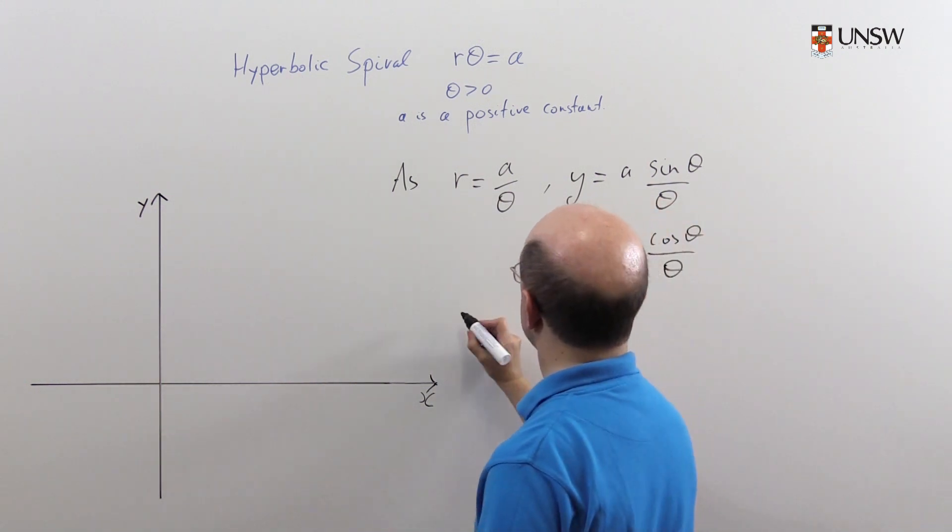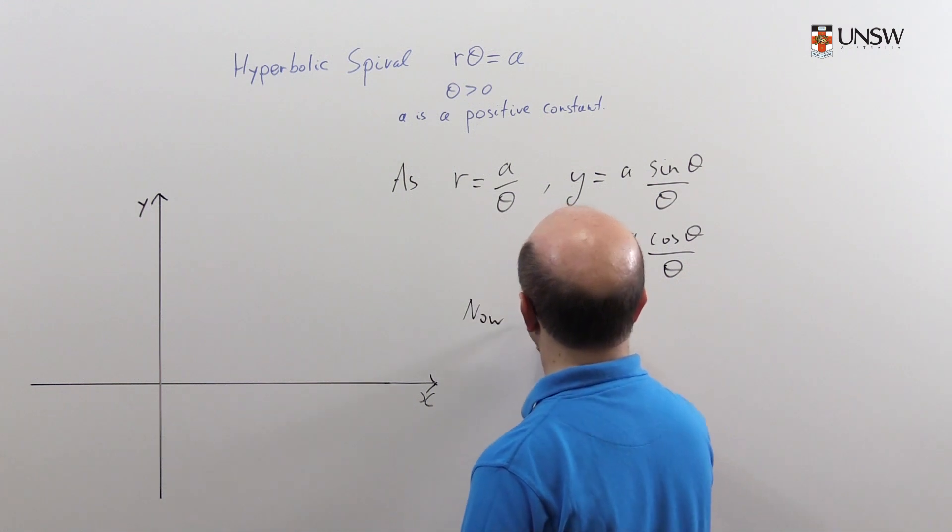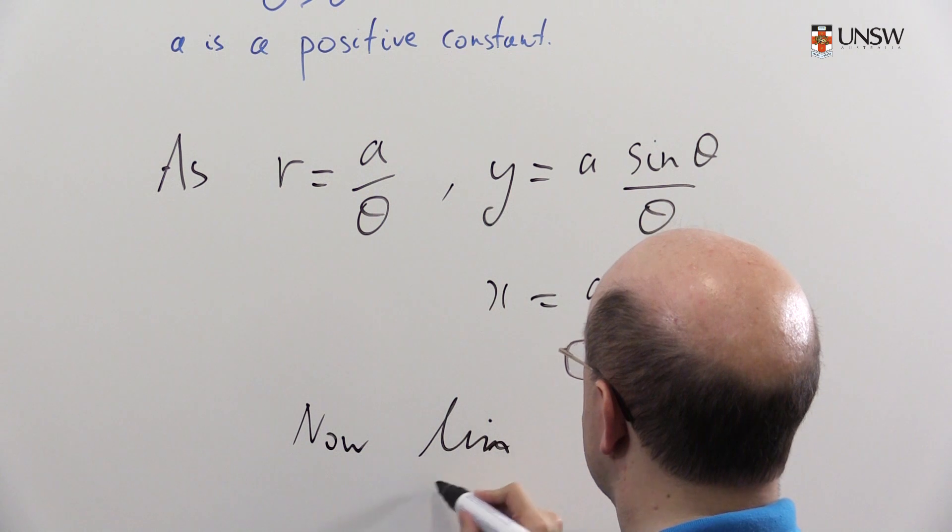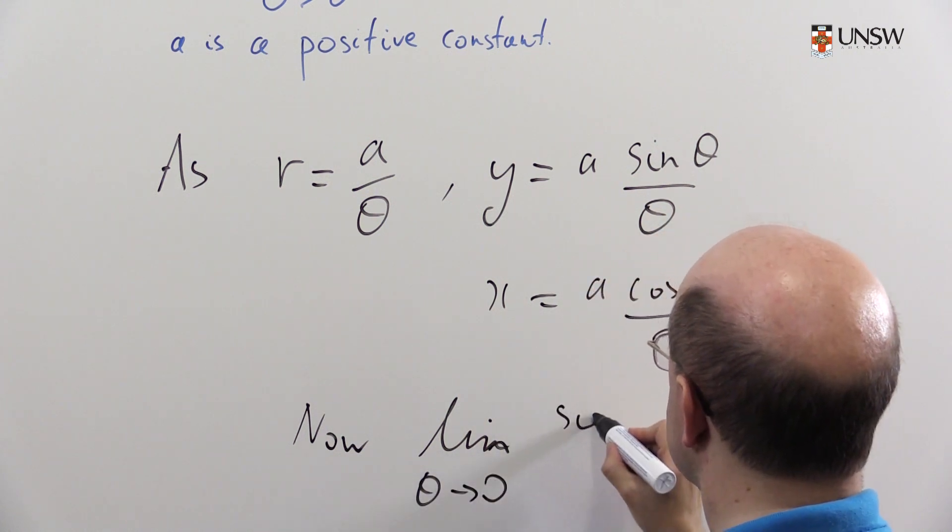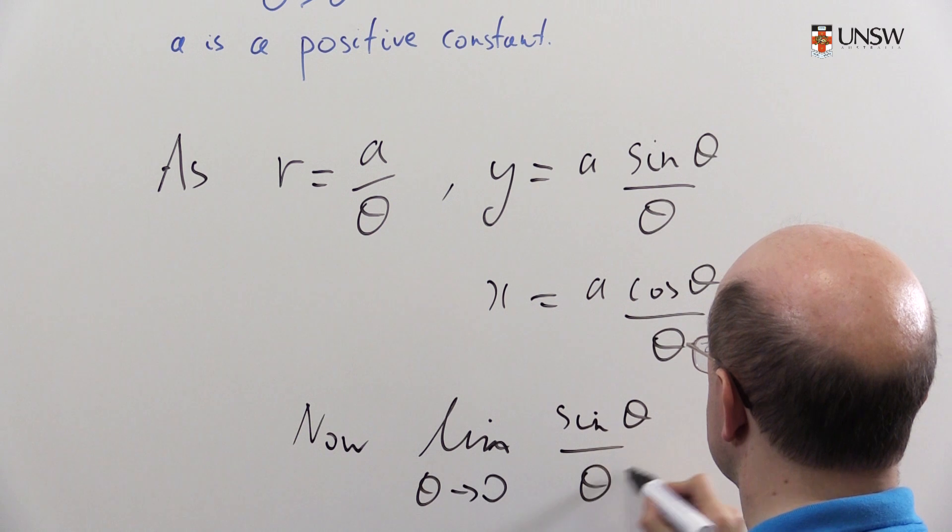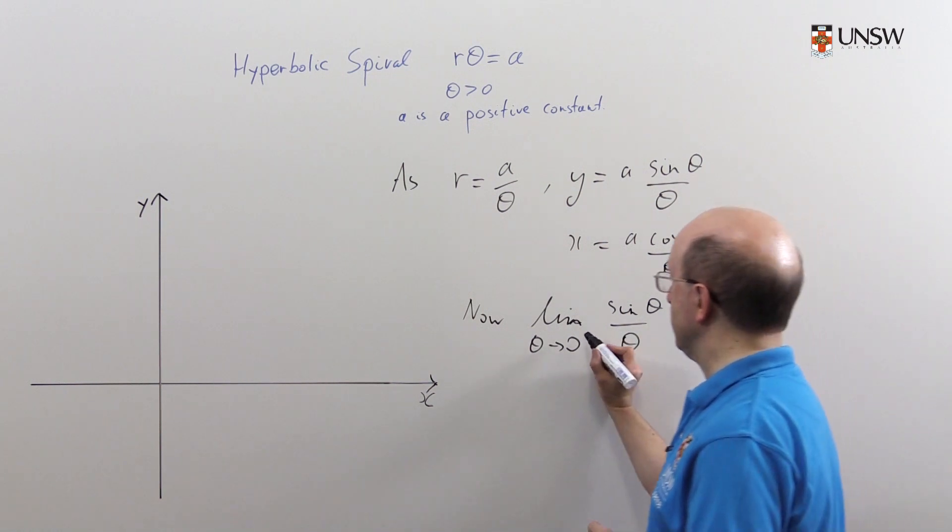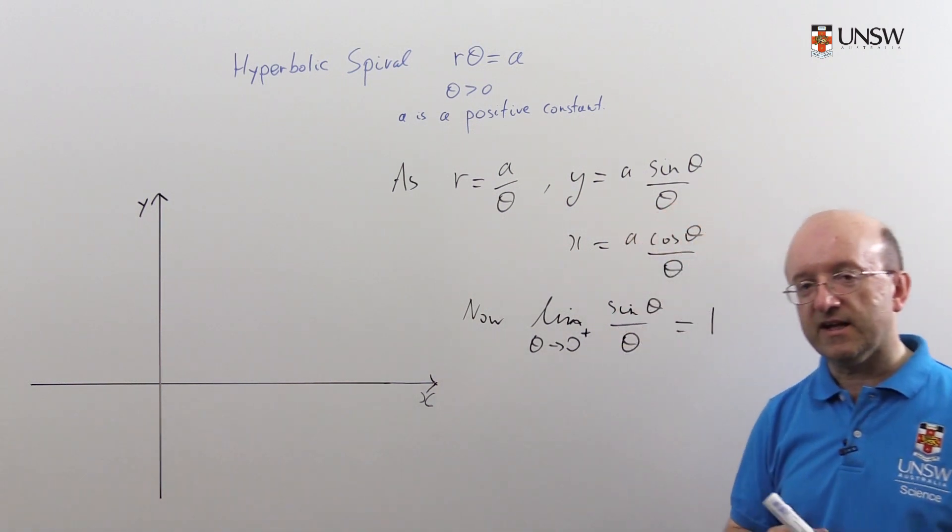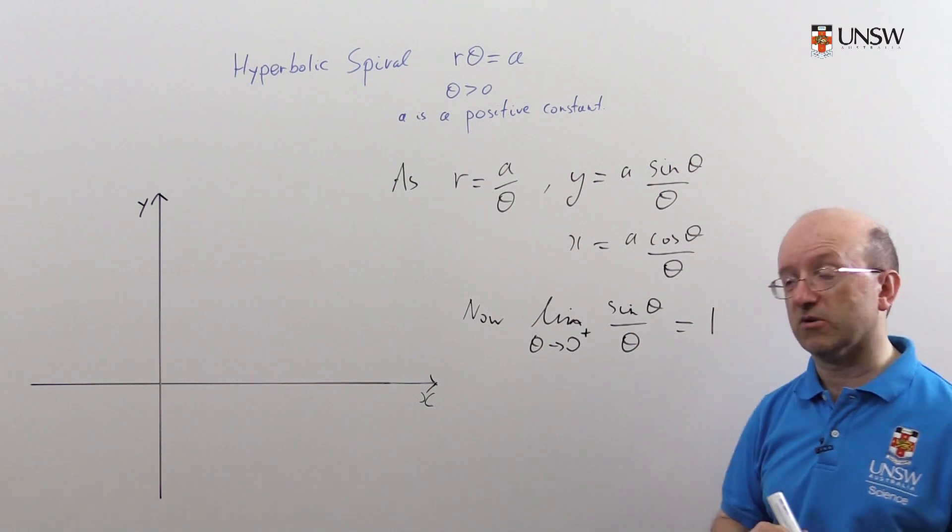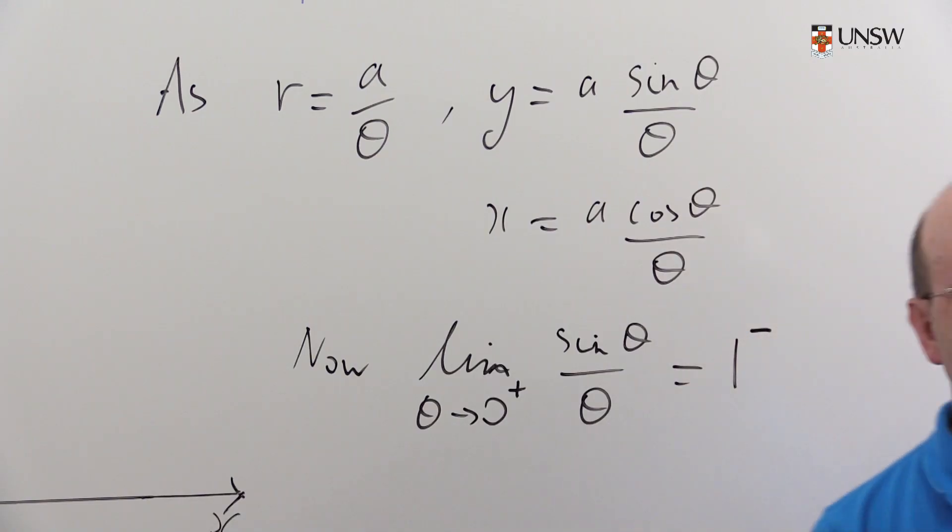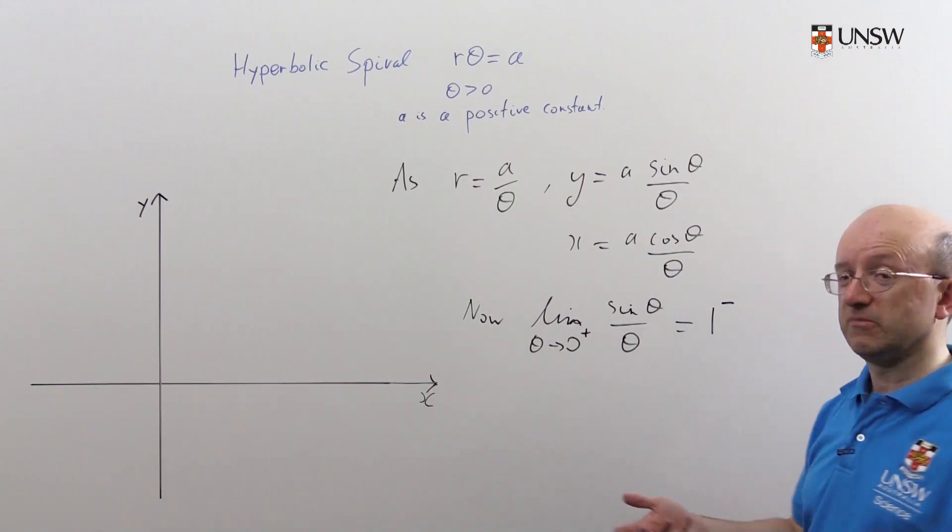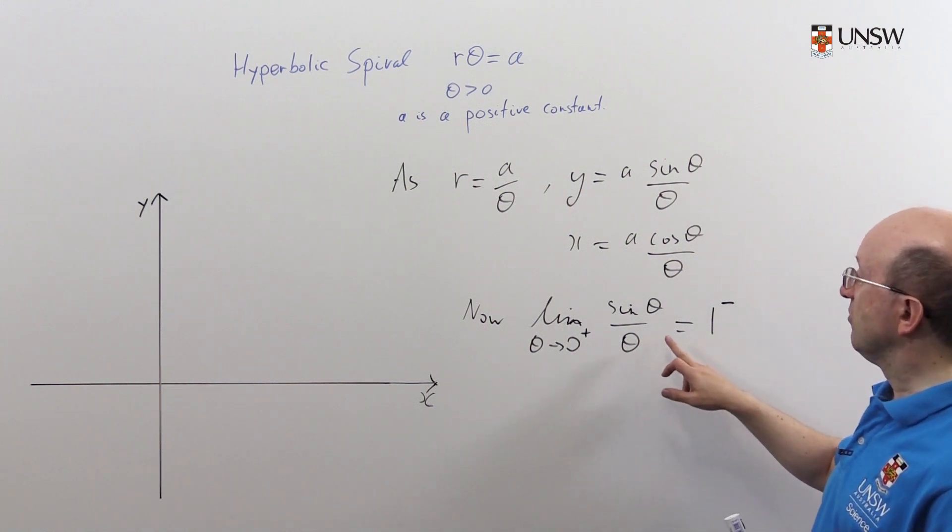We know that the limit as theta goes to zero of sine theta over theta is one. In fact we can say a little bit more than that: as theta goes to zero from above, which is what we're interested in, sine theta over theta will in fact tend to one from below. We know that because sine theta is strictly less than theta if theta is positive. That's actually a very simple exercise in using the mean value theorem.